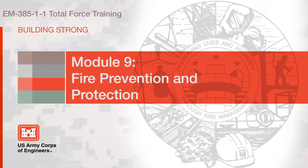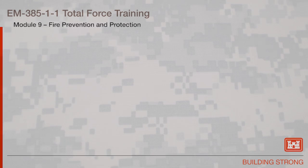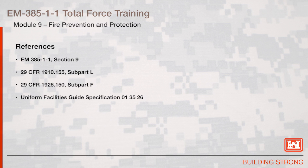Section 9: Fire Prevention and Protection. The references for this section are EM385, TAC 1, Section 9, 29 CFR 1910.155 Subpart L, 29 CFR 1926.150 Subpart F, and the Uniform Facilities Guide Specification 013526.